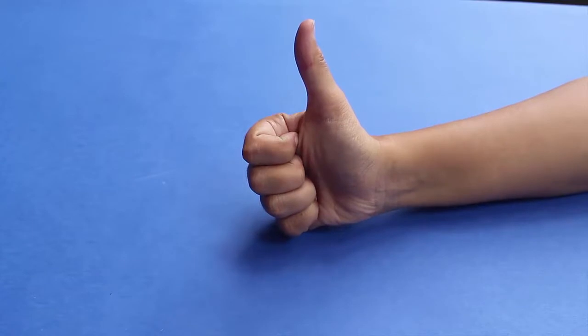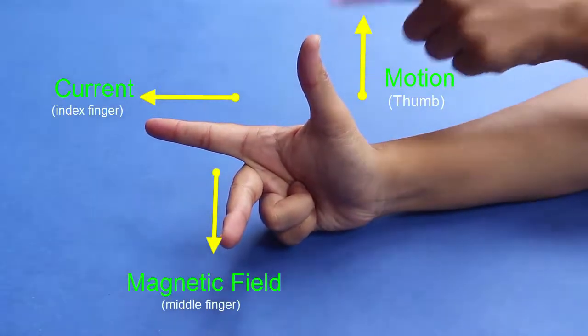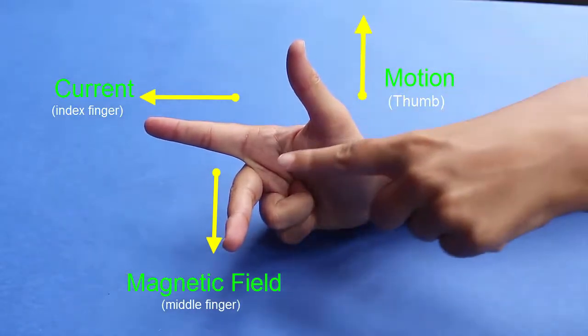This can be explained by Fleming's right hand rule. Your thumb, index finger and middle finger are at right angles with each other.